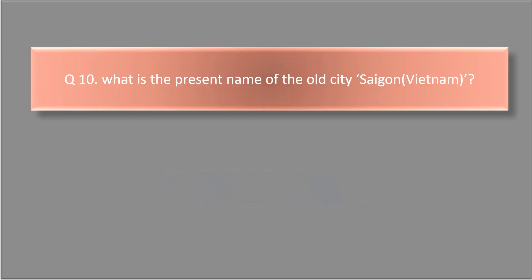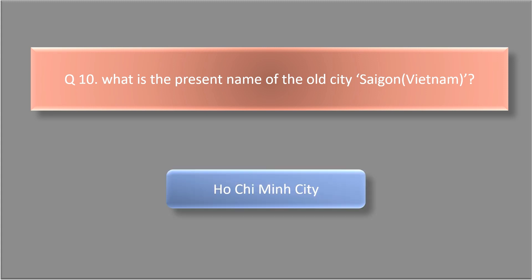What is the present name of the old city Saigon? The answer is Ho Chi Minh City.